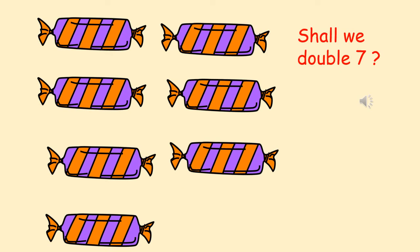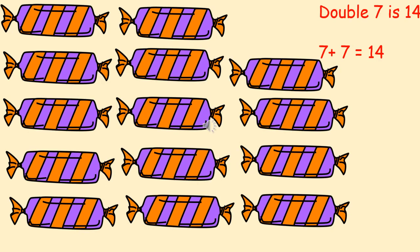I think you're getting quite good at this, Year 1. Let's try doubling seven. What will I need to do? Okay, have a go. There's a lot of sweets there. I've doubled seven. So double seven is 14. Seven plus seven equals 14. We started off with seven, and then we added another seven, and the total is 14. Double seven is 14.